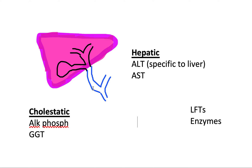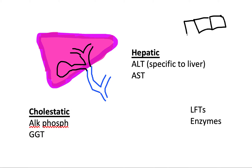The anatomy of the bile ducts involves the cystic duct, the hepatic duct, and the common bile duct. We have hepatocytes lining the common duct. Inside these hepatocytes you will find the liver enzymes. With the hepatic enzymes — associated with the hepatic ducts — you are going to get ALT and AST.